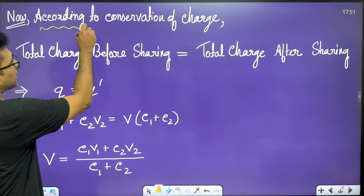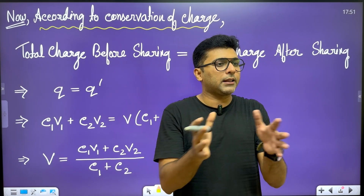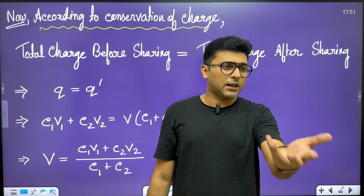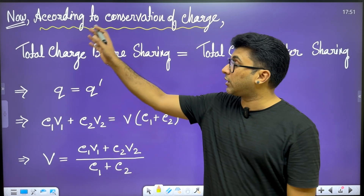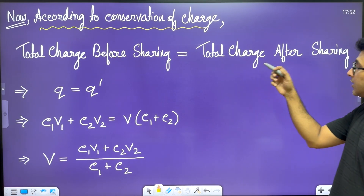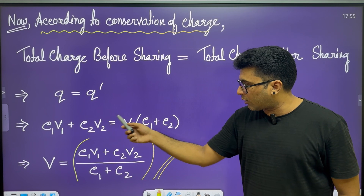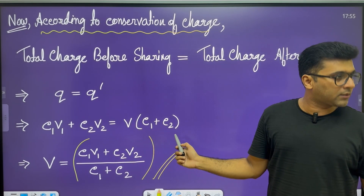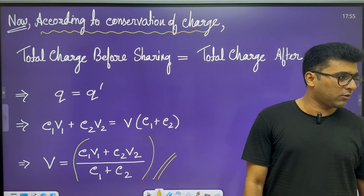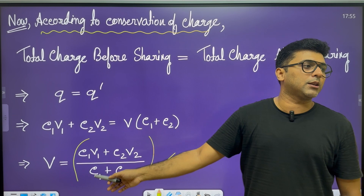According to the conservation of charge, charge does not get created or destroyed — it only transfers between bodies. In this isolated system, the total charge remains constant. Therefore, total charge before sharing equals total charge after sharing: Q equals Q dash. That gives us C1V1 plus C2V2 equals V into C1 plus C2, and the common potential V equals C1V1 plus C2V2 divided by C1 plus C2.